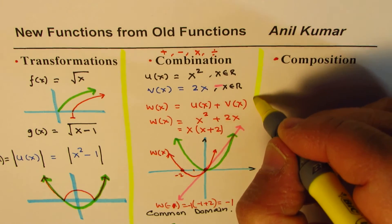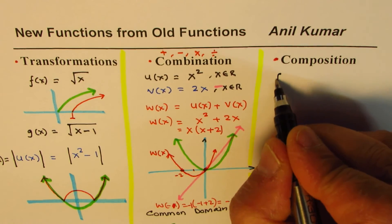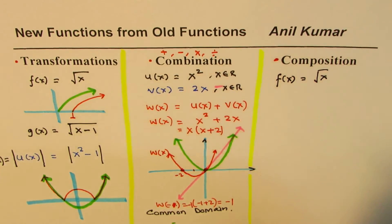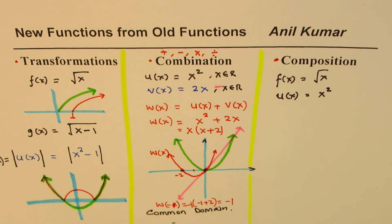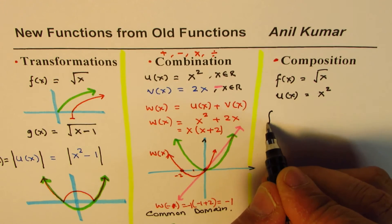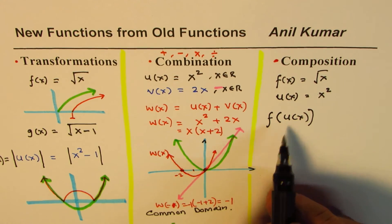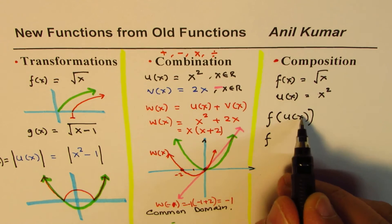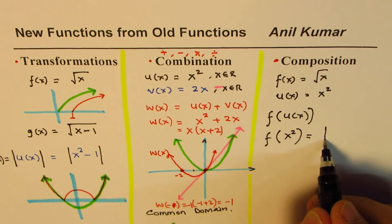In this series of videos you'll find many examples for transformation, combination, and composition to explore these topics in further detail. Now for the third way — composition — let's take f of x equals square root of x and u of x equals x squared. We compose one function from the other with an operation written as f of u of x. This means f applied to whatever u of x is.